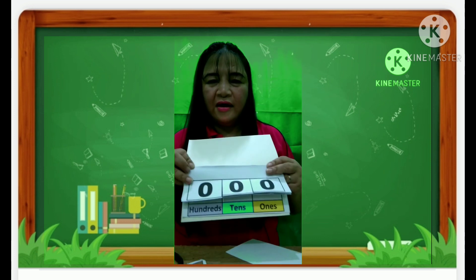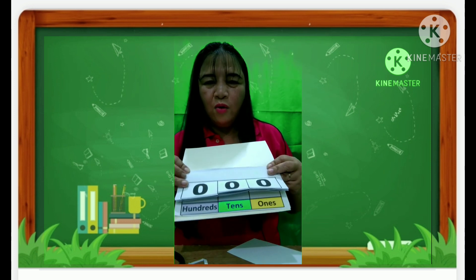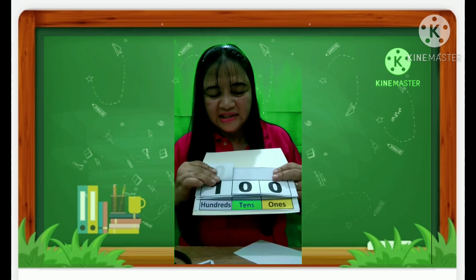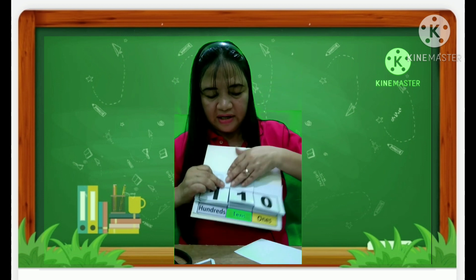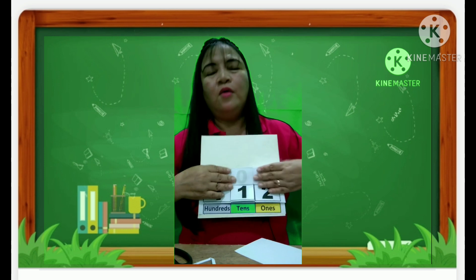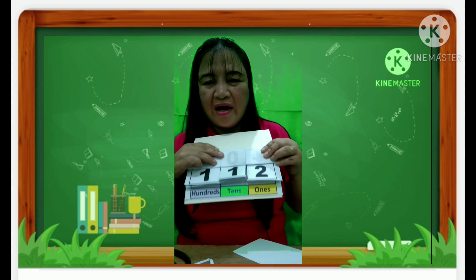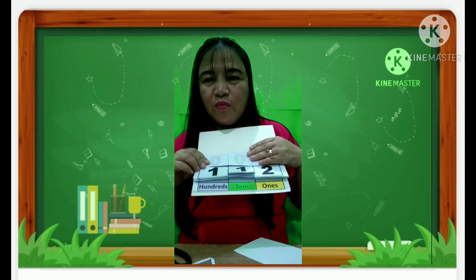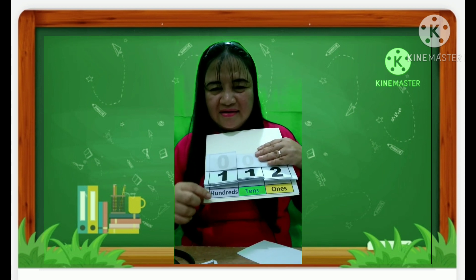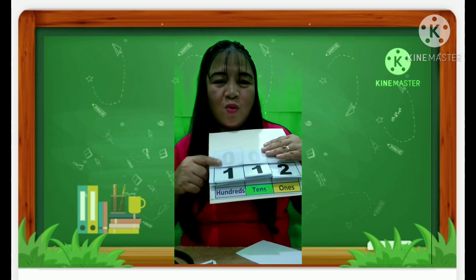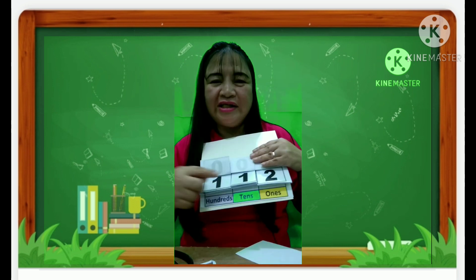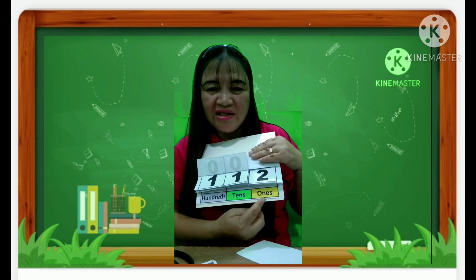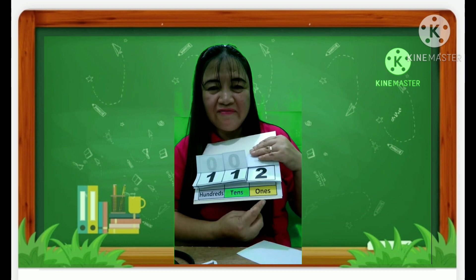Now we already have our place value chart. For example, I will set one hundred twelve. So what is the number in the hundreds place? Correct — one. What about in the tens place? We have one. What about in the ones place? We have two.